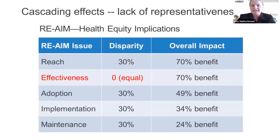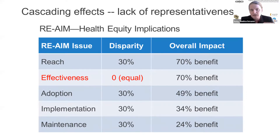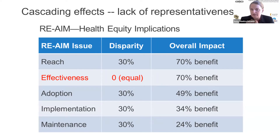This is the notion of the cascading effects. When I have the disparity column here — the left-hand column with the RE-AIM domain or issue, the middle column with the notion of a disparity or difference, inequity in how this is distributed — and then what happens to the overall impact: who is left out.